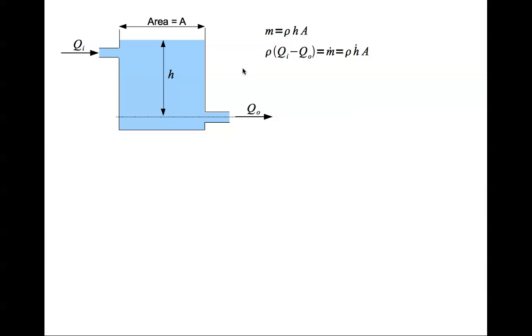What is the mass accumulation rate? It is the derivative of mass. When we do M dot we get rho H dot A. When you differentiate M with respect to time, rho and A are constant. Only H is varying with respect to time. Therefore we have only H dot. So we can write an equation for H dot as QI minus Q0 divided by A.